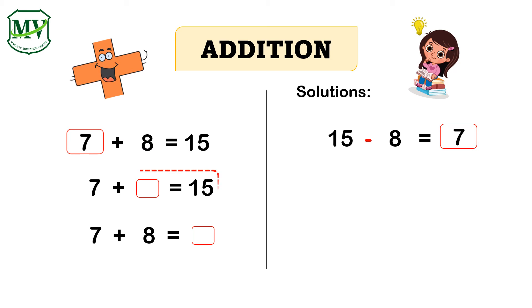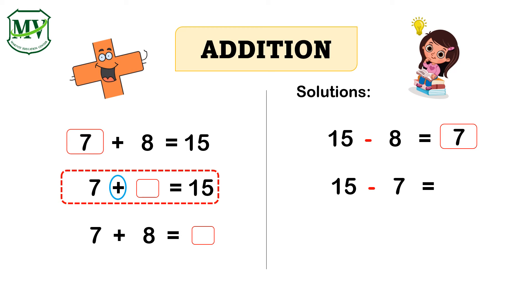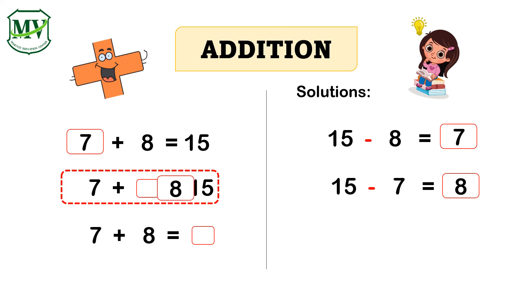Next, 7 plus unknown number equals 15. If the second addend is the unknown, we change the operation from addition into subtraction. Then subtract the first addend 7 from 15, our total. 15 minus 7 equals 8. The unknown number is 8.